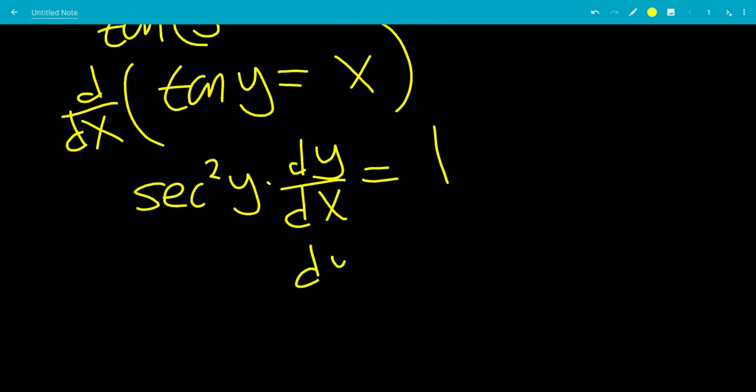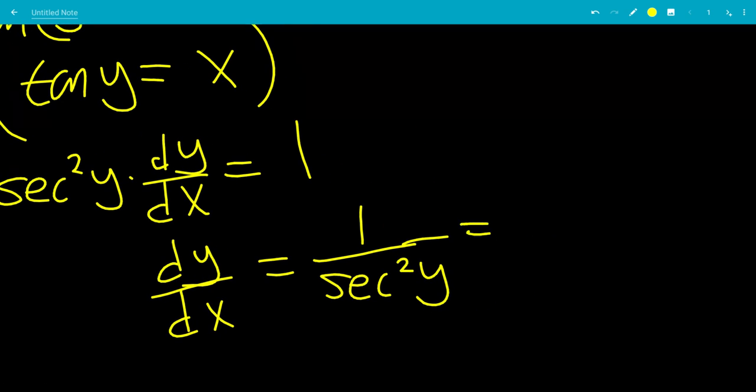So, now we can just divide by secant squared y, leaving us with dy dx equals 1 over secant squared y. So this is 1 over, so there's a trick identity, secant squared of something equals tangent squared of something plus 1.